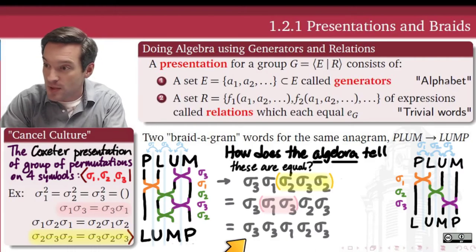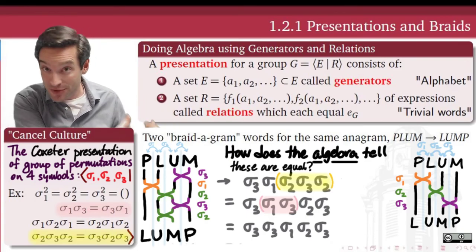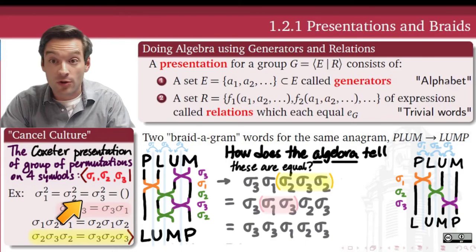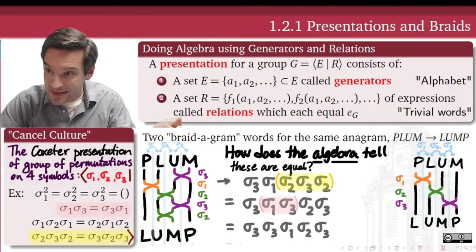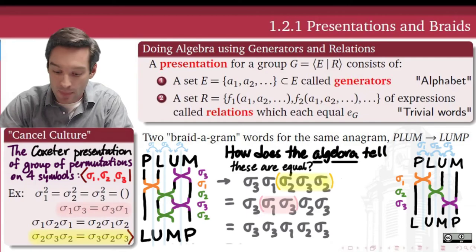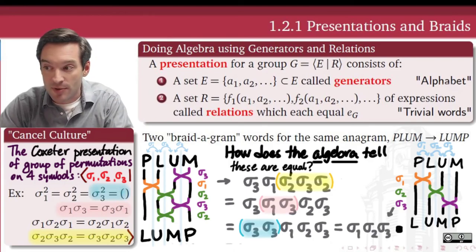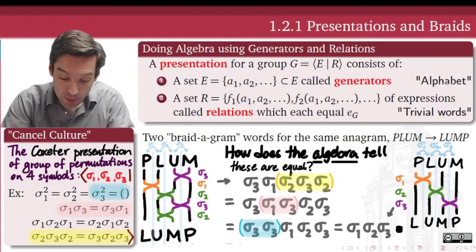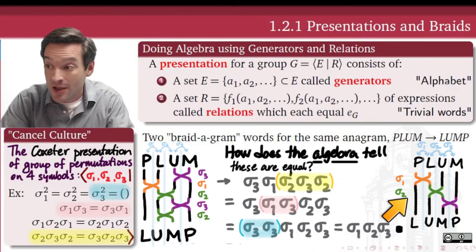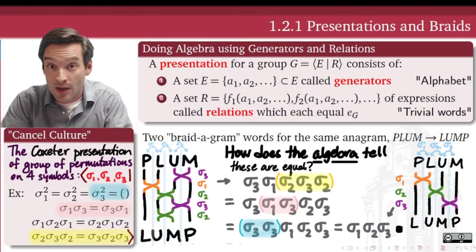After this substitution, we now have a sigma three next to another sigma three. By the order relation, sigma three squared equals the identity permutation. So we can group those two sigma threes together and cancel them — they reduce to the identity and disappear from the expression. At the end of this whole process, we have arrived at sigma one, sigma two, sigma three — exactly the simpler word represented by the simpler braidogram on the right.